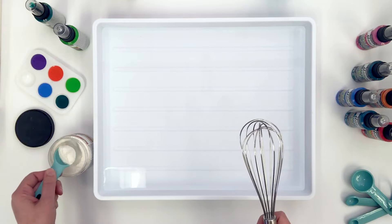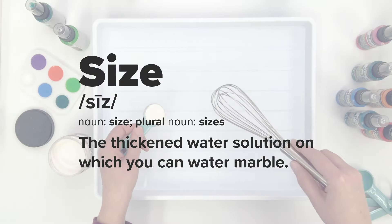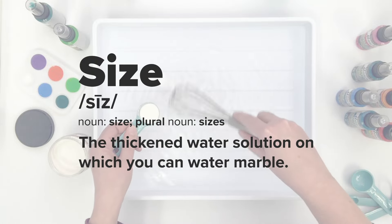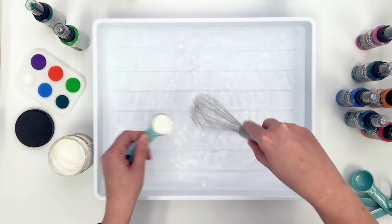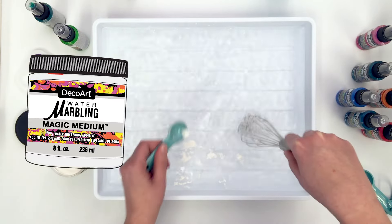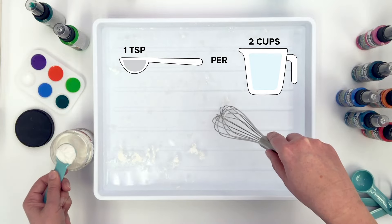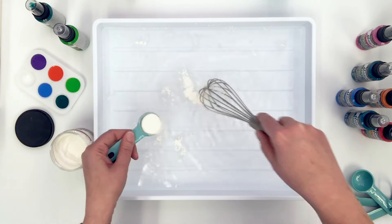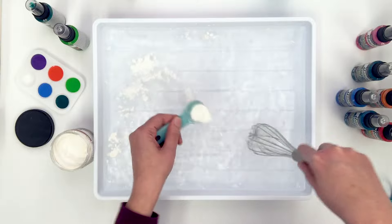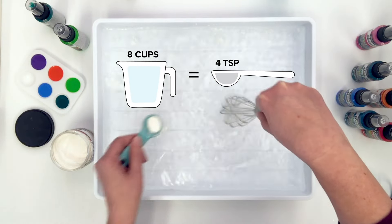Now that you have your workspace ready, you need to prepare a special water called size. Water must be thickened so the paint will float on the surface. DecoArt's Magic Medium water thickening additive is formulated to do exactly this. The mixing ratio for this is two cups of water to one teaspoon of Magic Medium powder. We're using the DecoArt water marbling tray for our designs. It holds eight cups of water, so we will use four teaspoons of Magic Medium.